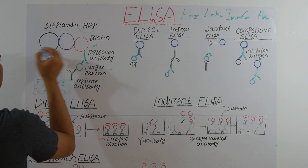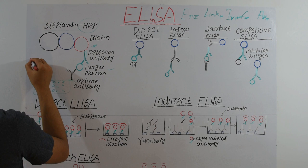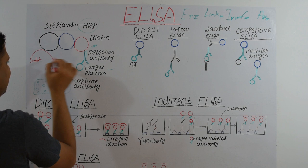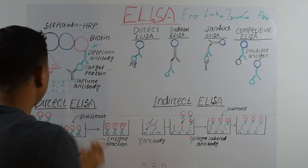When we put a substrate onto the HRP, it will produce light — it will glow. This glow can be detected through a plate reader, usually at 450 nanometer absorption.